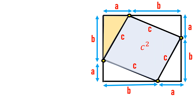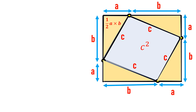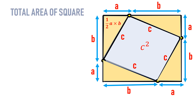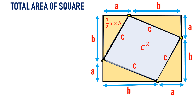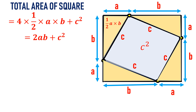The area of one of the four triangles is one half times a times b. Similarly, the area of each of the other three triangles is also half times a times b. The total area of the bigger square equals four times one half times a times b, plus the area of the smaller square c squared, which simplifies to 2ab plus c squared.